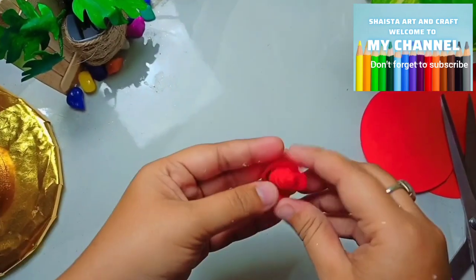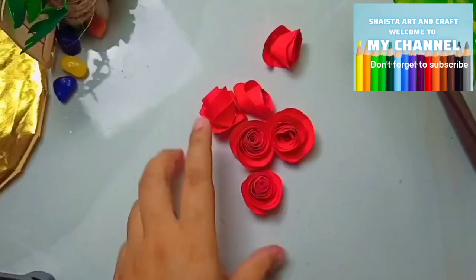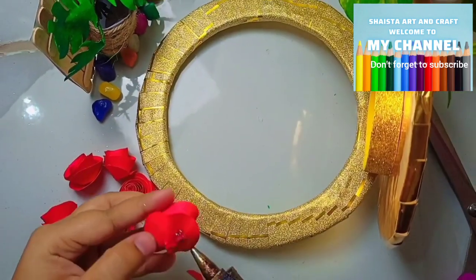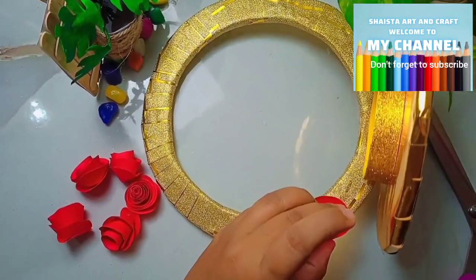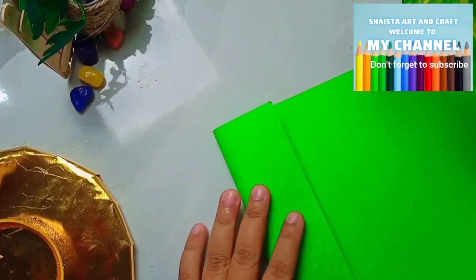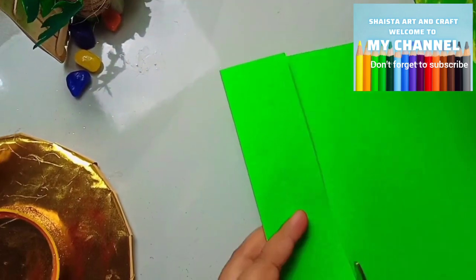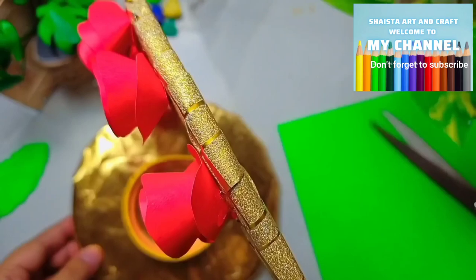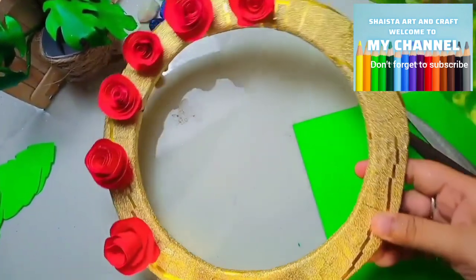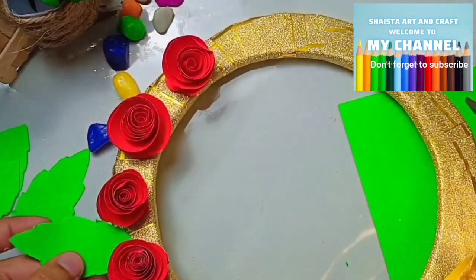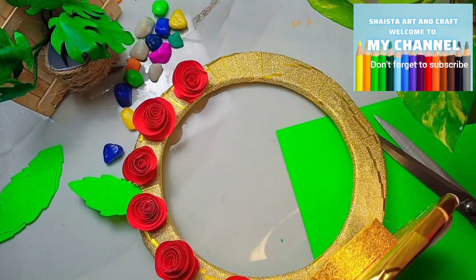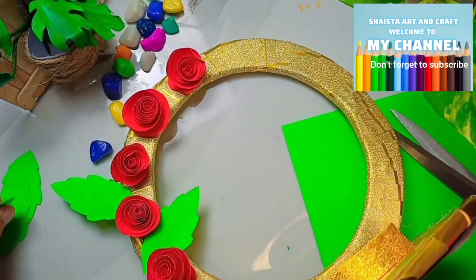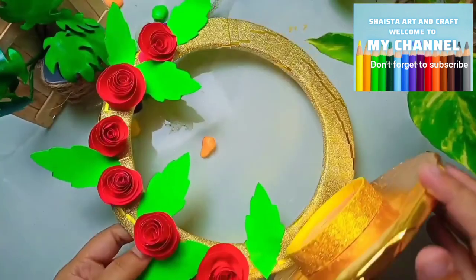The first step is to paste the roses together. We will paste the green leaves. For the leaves we have got green sheets which are brighter. I have cut the leaves. You can also use dark green as well.